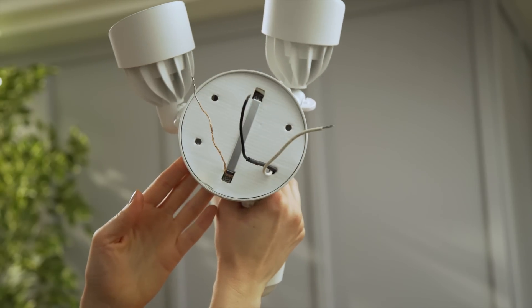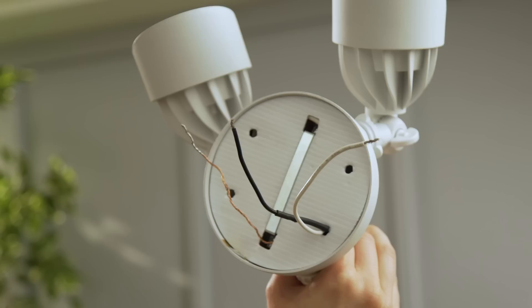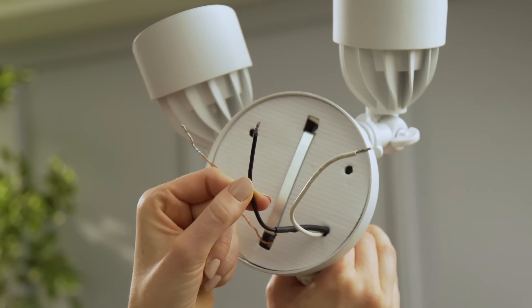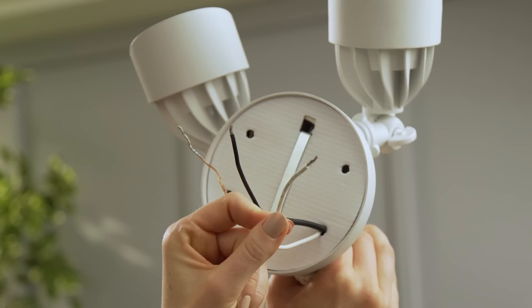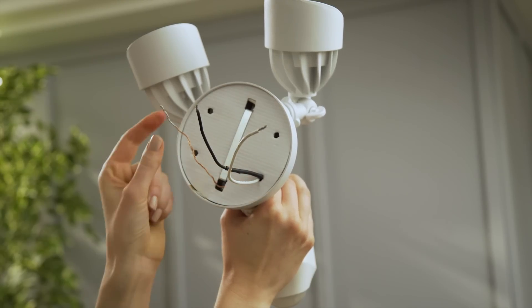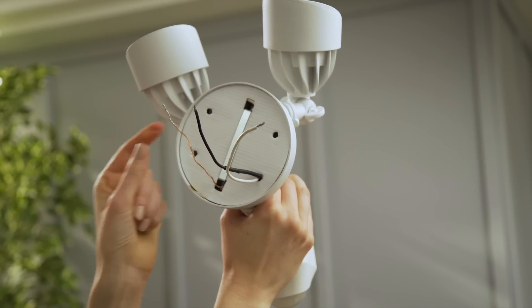On the back of your floodlight cam are three wires. This black wire is the hot wire and will connect to the black wire in your junction box. The white wire is neutral and will connect to your neutral or white wires. This copper wire is the ground.